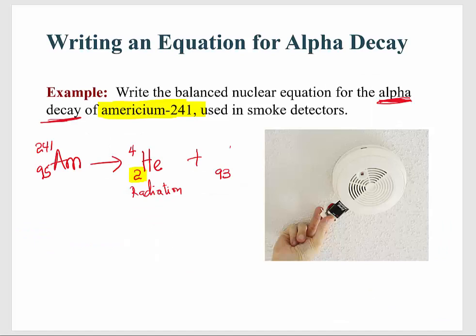The daughter nuclide is neptunium, symbol Np. For the mass number, the alpha particle already has 4, so we subtract 4 from 241 to get 237. That gives us the balanced nuclear equation for alpha emission of americium-241.